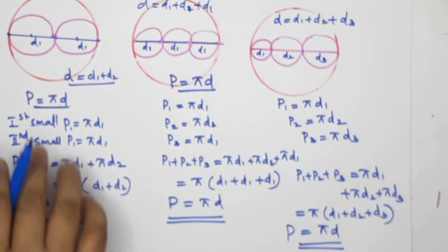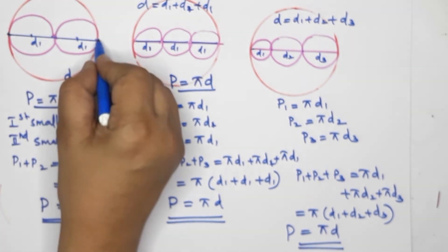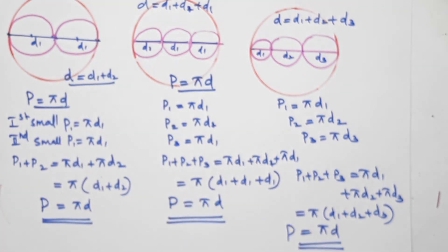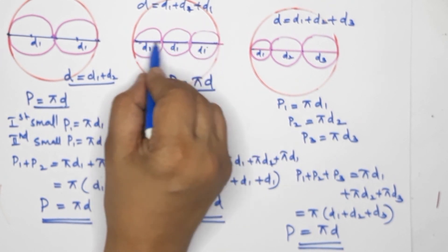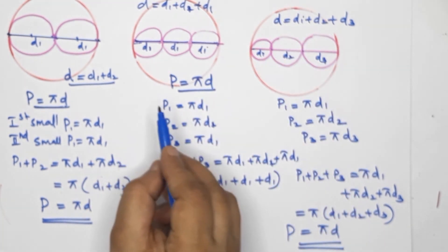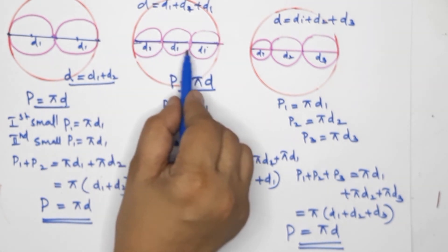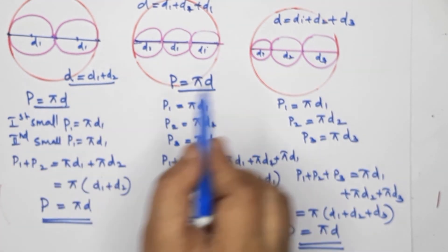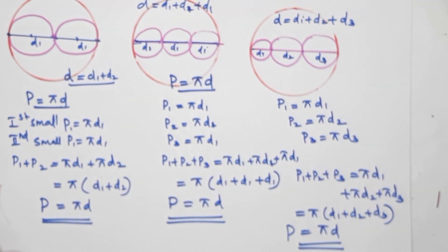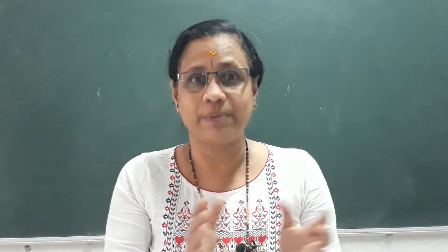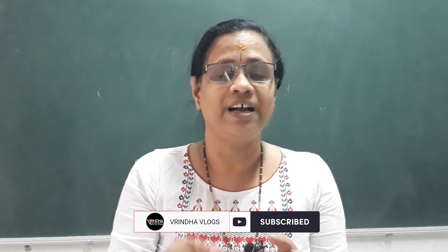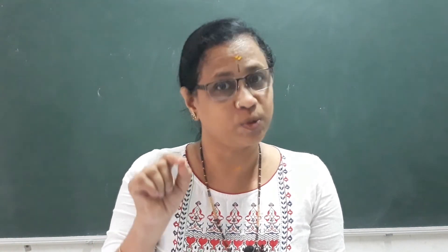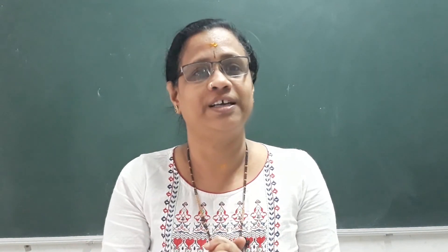There are only three problems on page 137. I will tell you the next topic in the next class. The perimeter is equal to 2 pi r, and the perimeter is equal to pi d. This formula is important. Okay, thank you.